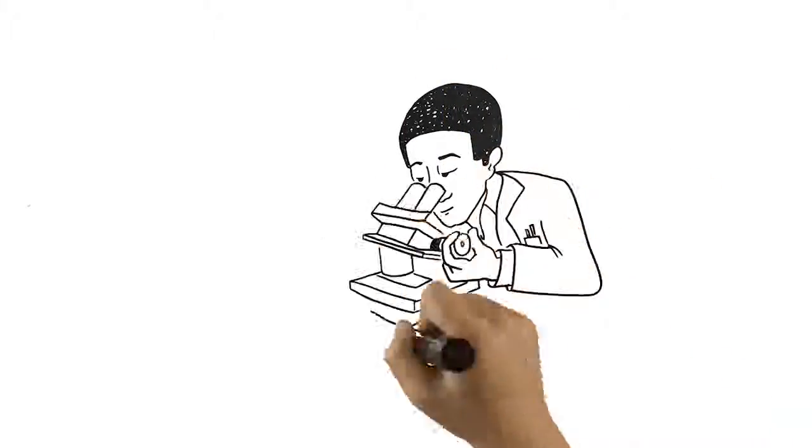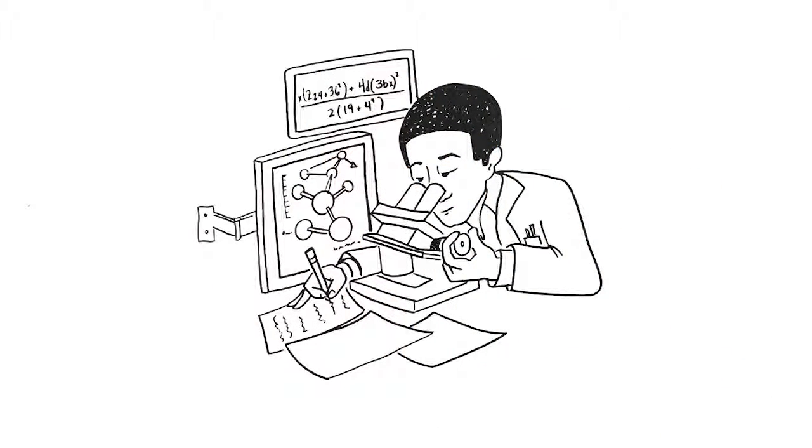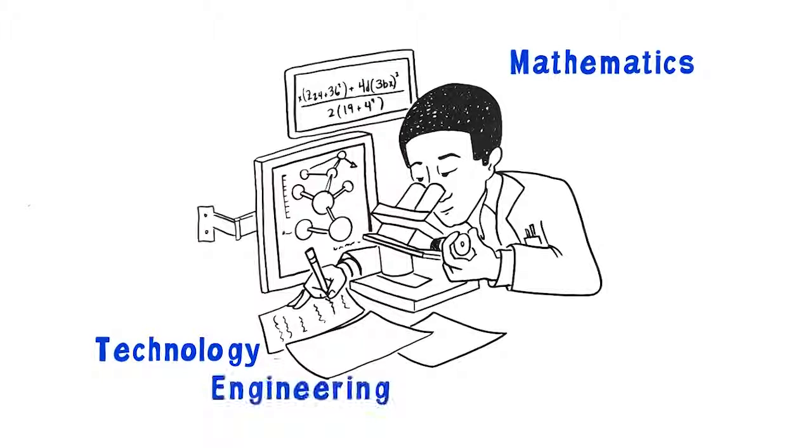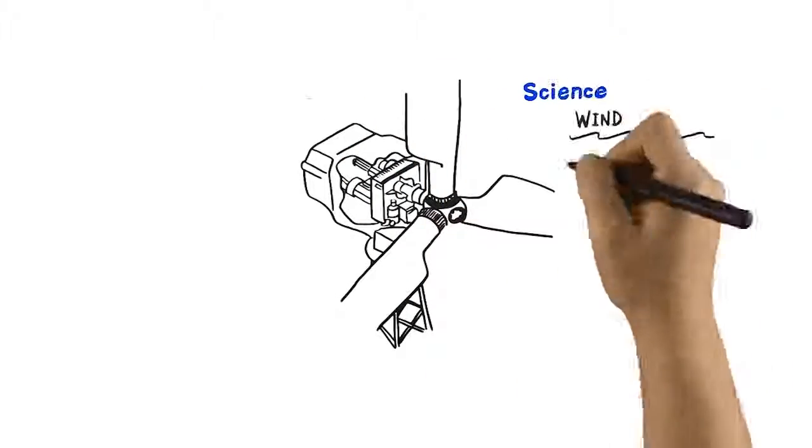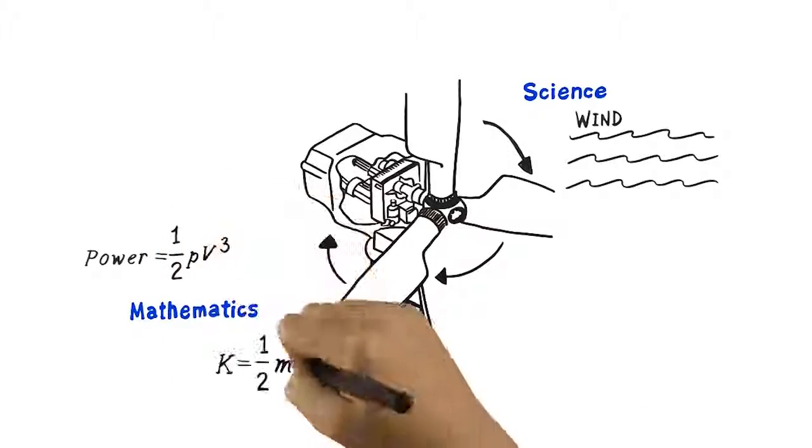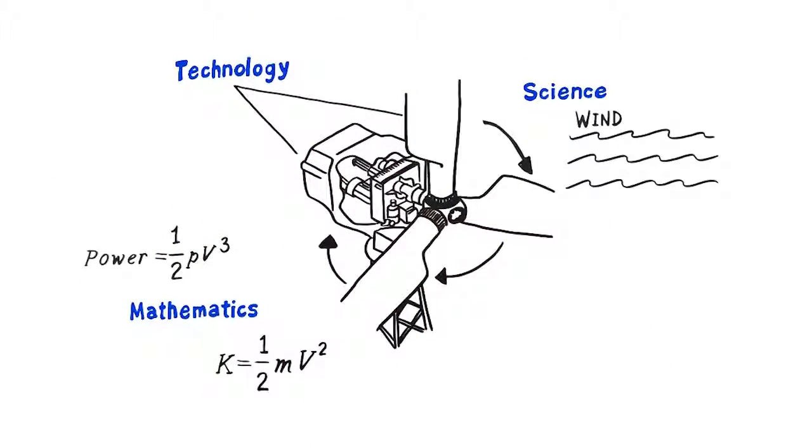After all, in the real world, science relies on technology, mathematics, and engineering. And engineering depends on findings from science, the application of mathematics, and the use of technological tools.